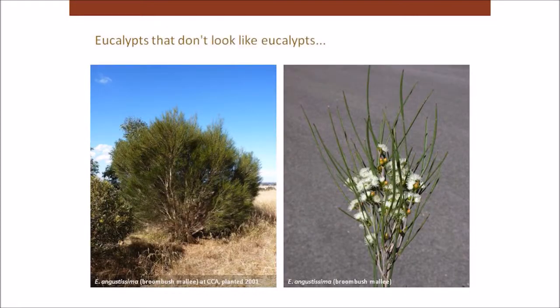There are lots of eucalypts that don't look like eucalypts. This species here looks like the broom bush Melaleuca uncinata, but it is a true eucalypt with all the features of the eucalypts. That's eucalyptus angustissima, which means very narrow. That plant is actually growing at Currency Creek Arboretum. It has a very high content of oil in the leaves — they actually grow this species for eucalyptus oil in Western Australia.